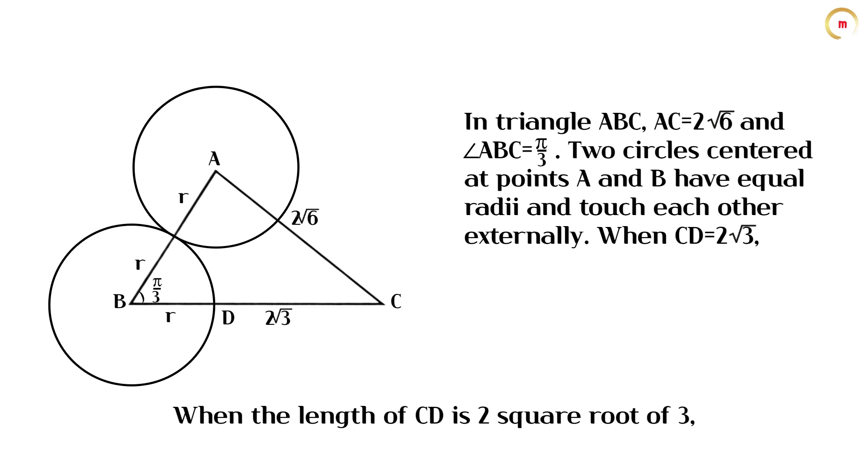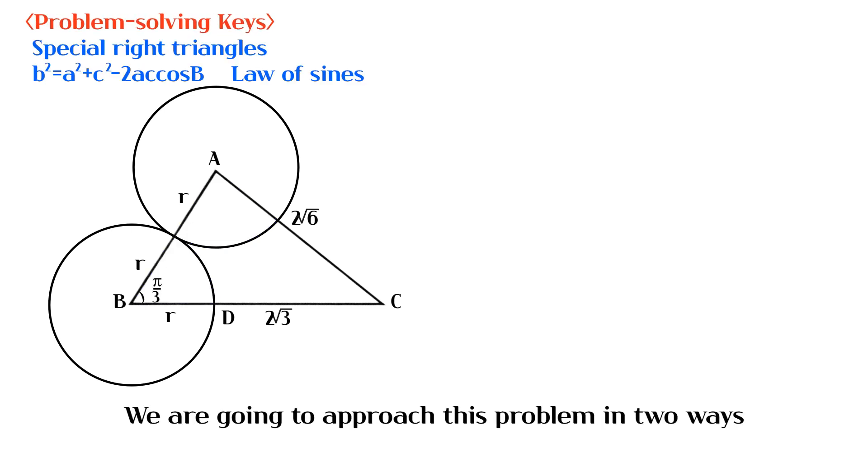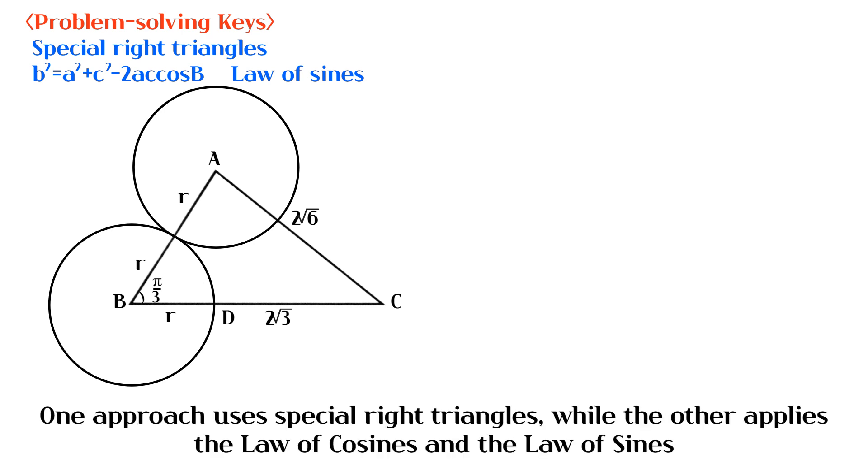When the length of CD is 2√3, what is the area of the shaded region? We are going to approach this problem in two ways. One approach uses special right triangles, while the other applies the law of cosines and the law of sines.